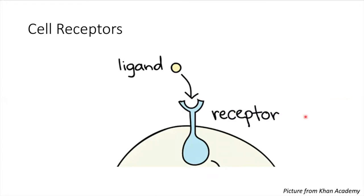So this is how it works. The receptor is here, and it would be specific for a certain substance. For example, this receptor is specific for estrogen, and it would only bind to a ligand or to a substance that is estrogen.